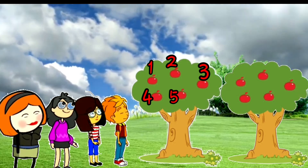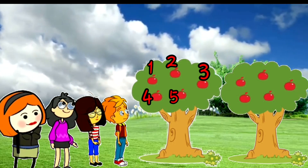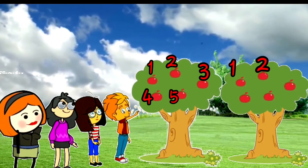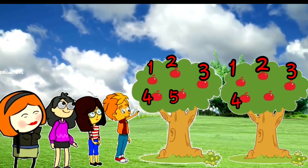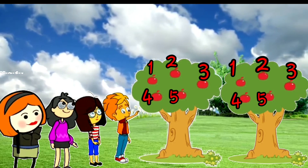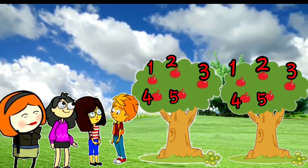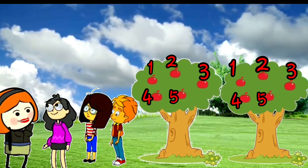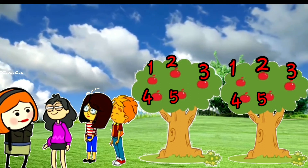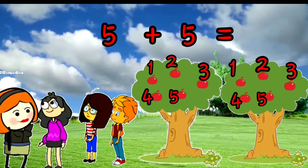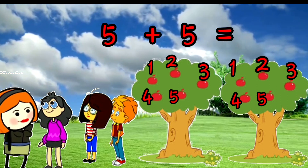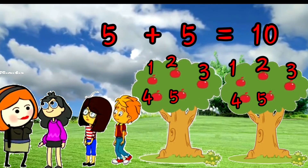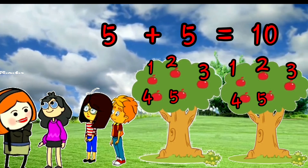Can you tell me how many apples are on the second tree? One, two, three, four, and five apples. Teacher, there are five apples on the second tree. So can you tell me how many apples are there altogether? Teacher, five plus five is equal to ten. Very good.